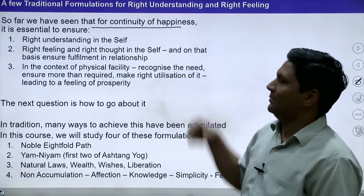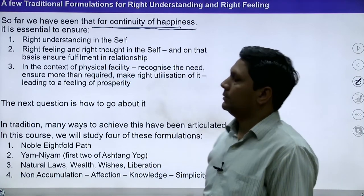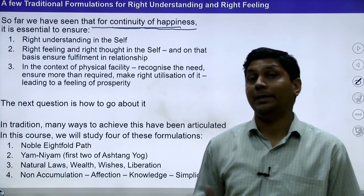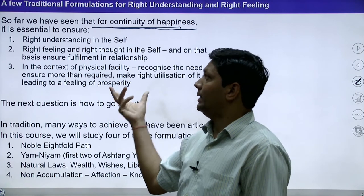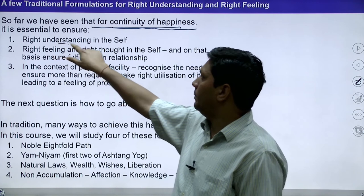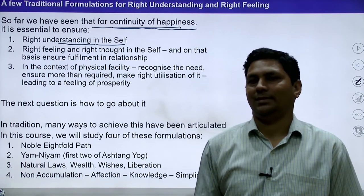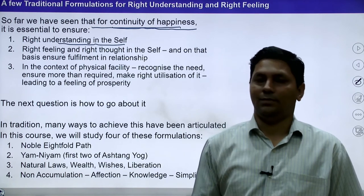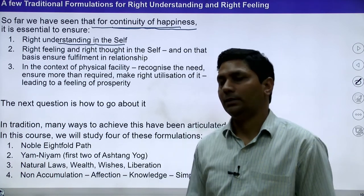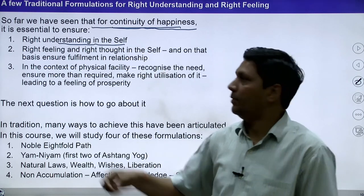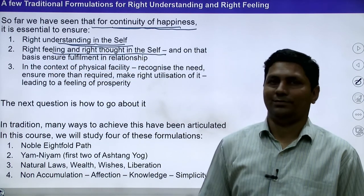So far we have studied continuity of happiness — in fact the whole course is to ensure continuity of happiness. That is our basic aspiration. For continuity of happiness, number one, right understanding in the self is required — understanding of reality at the level of self. With right understanding we have resolution, and with resolution we ensure continuity of happiness.